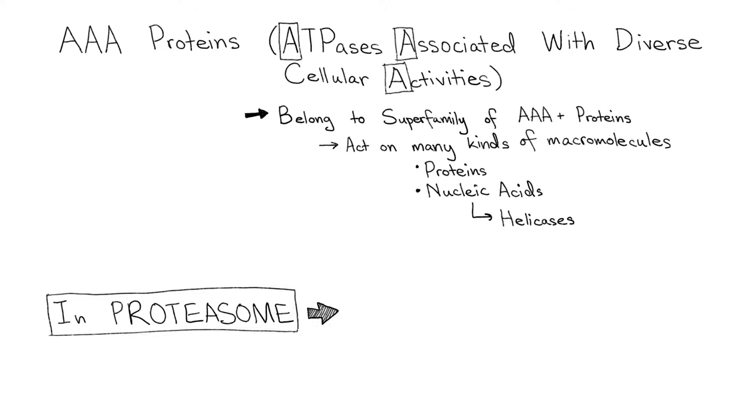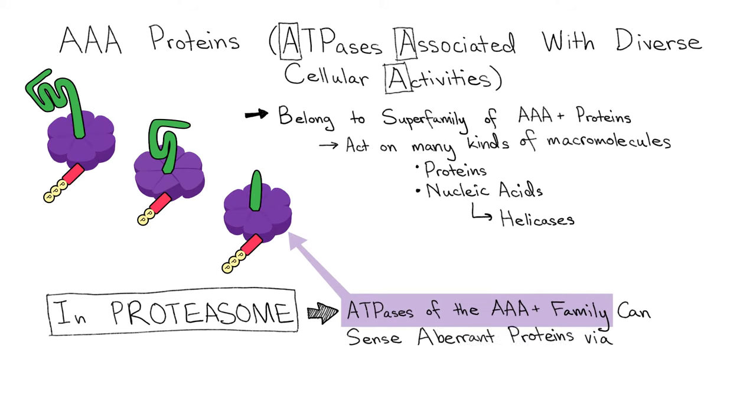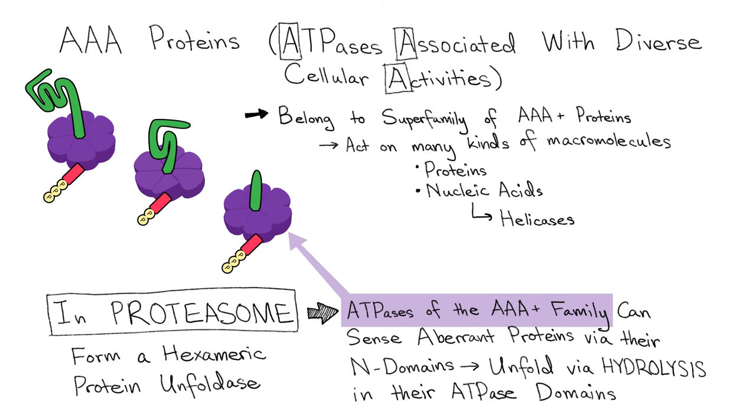In the proteasome, ATPases of the AAA plus family can sense aberrant proteins via their end domains and can unfold them via hydrolysis in their ATPase domains. Thus, the AAA proteins in the proteasome form a hexameric protein unfoldase.